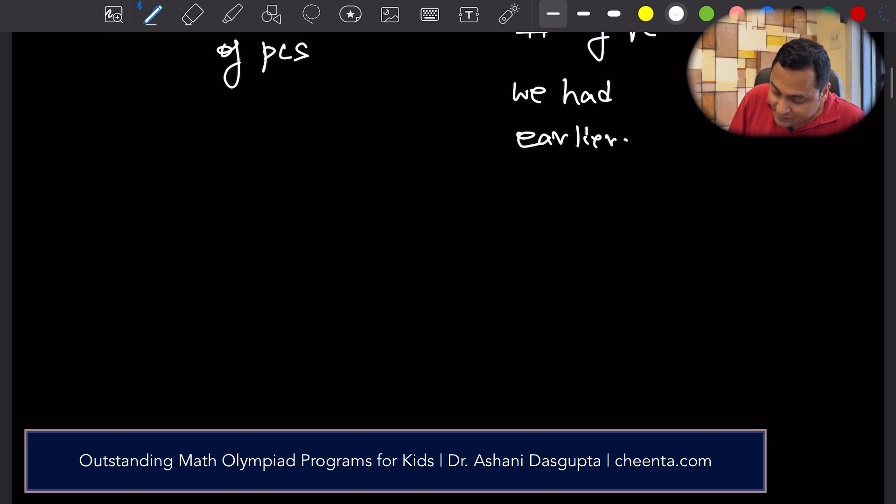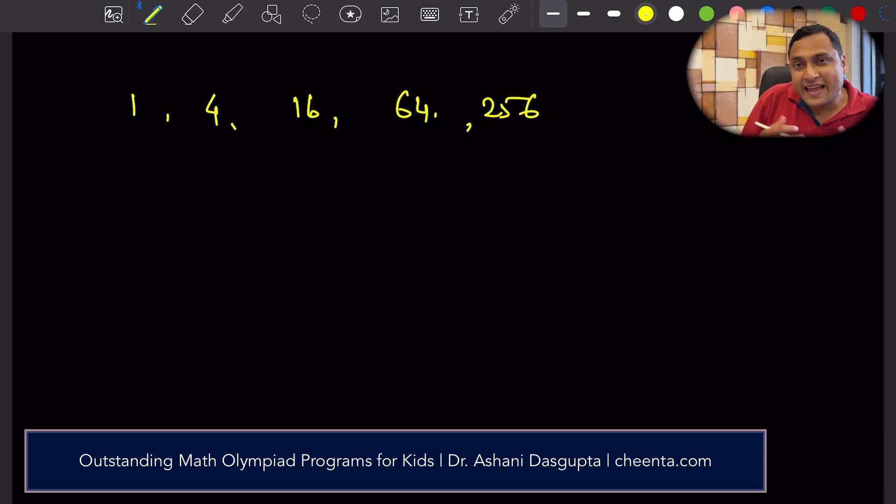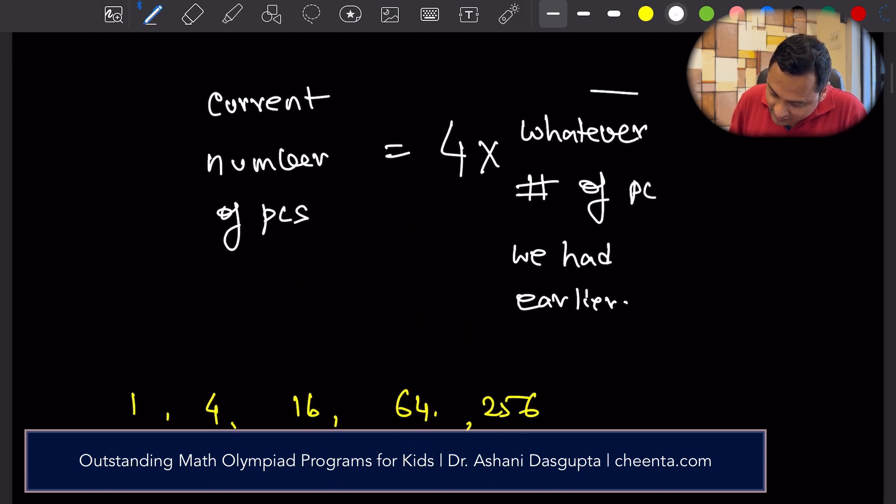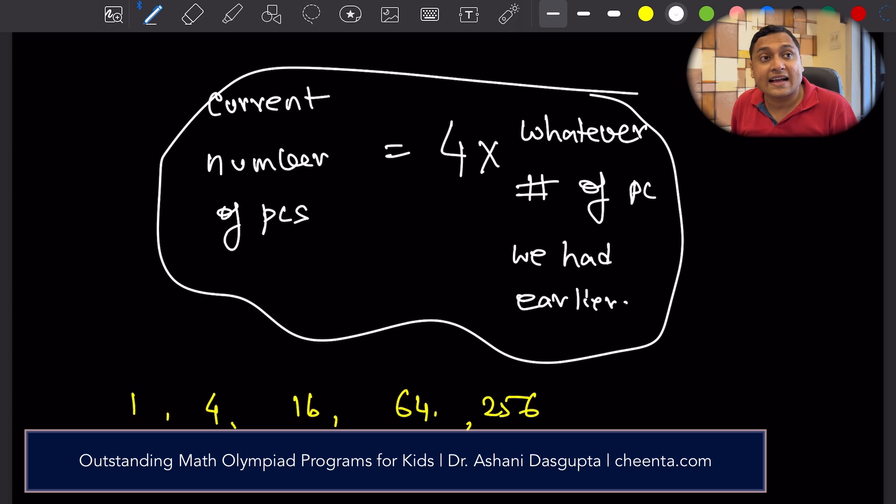So, the first few terms of the pattern are 1, 4, 16, 64, 256. We exactly know why this is happening because at each step, every triangle is broken down into 4 smaller pieces. And what I just wrote here, this one, is sometimes known as a recursive relation.